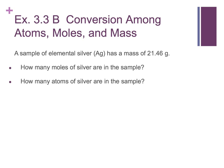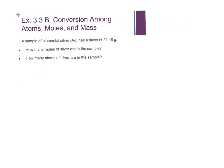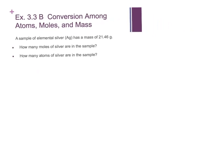An elemental sample of silver has a mass of 21.46 grams. How many moles of silver are in that sample? So we can start out easy here. 21.46 grams of silver. And on the periodic table, silver has a molar mass of 107.87 grams of silver.